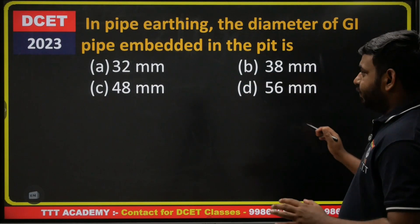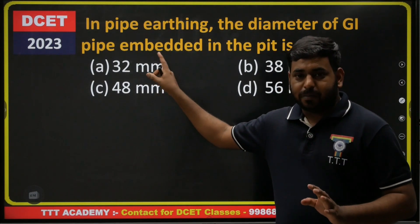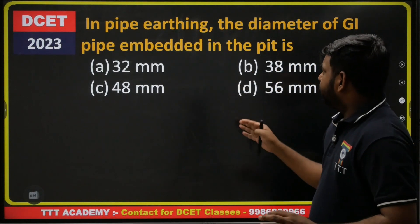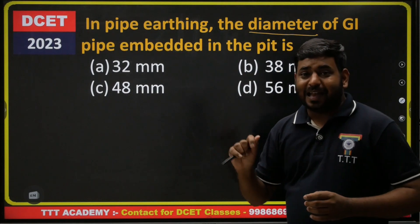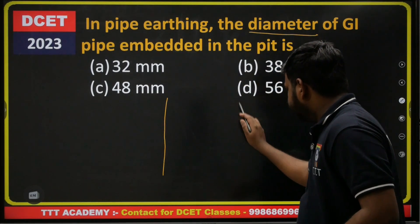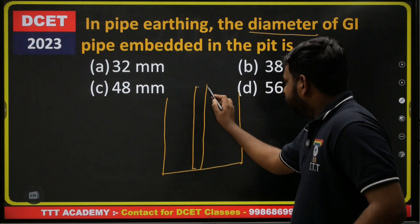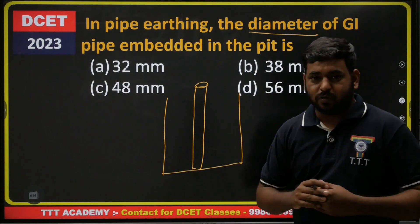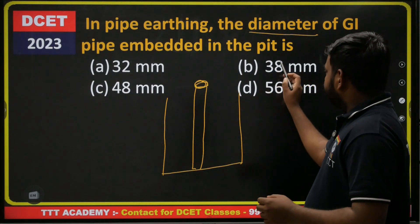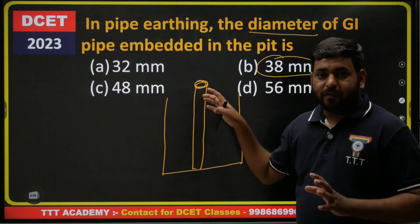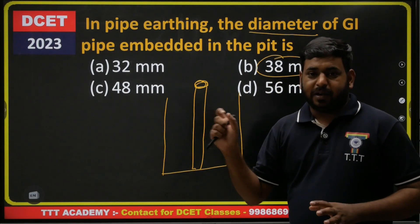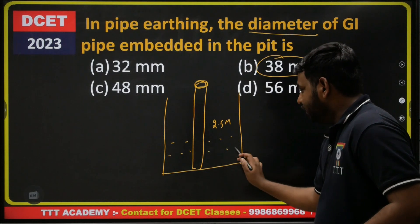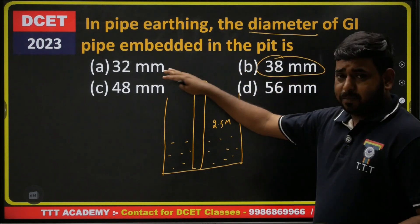In 2023, a question was asked about pipe earthing. The GI pipe — Galvanised Iron pipe — is embedded in an earth pit. The earth pit contains a mixture of coal, salt, and water. The pipe electrode inner diameter is 38 mm. The length must be at least 2.5 m. So, diameter of the GI pipe is 38 mm — this was a 2023 exam question.